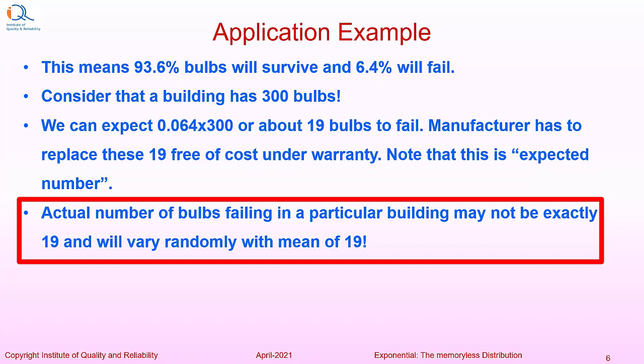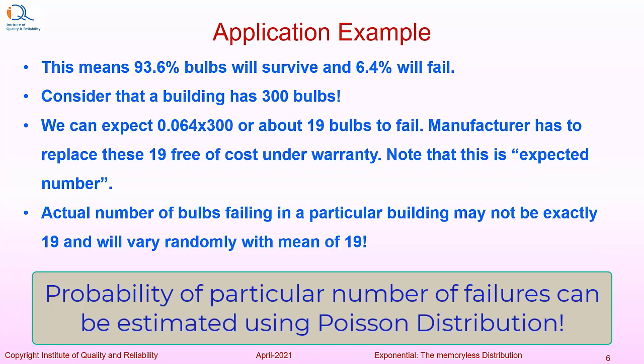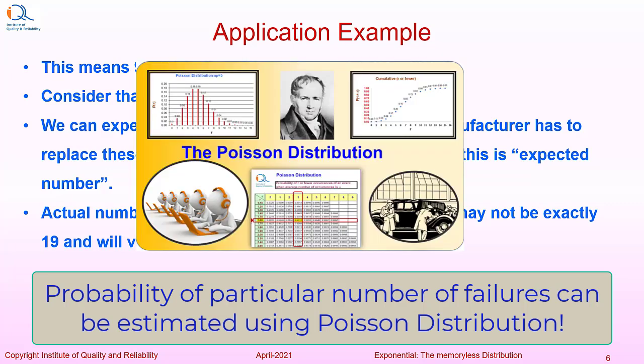Actual number of bulbs failing in a particular building with 300 bulbs may not be exactly 19 and will vary randomly with a mean of 19. Probability of a particular number of bulbs failing can be calculated or estimated using Poisson distribution with a mean of 19.